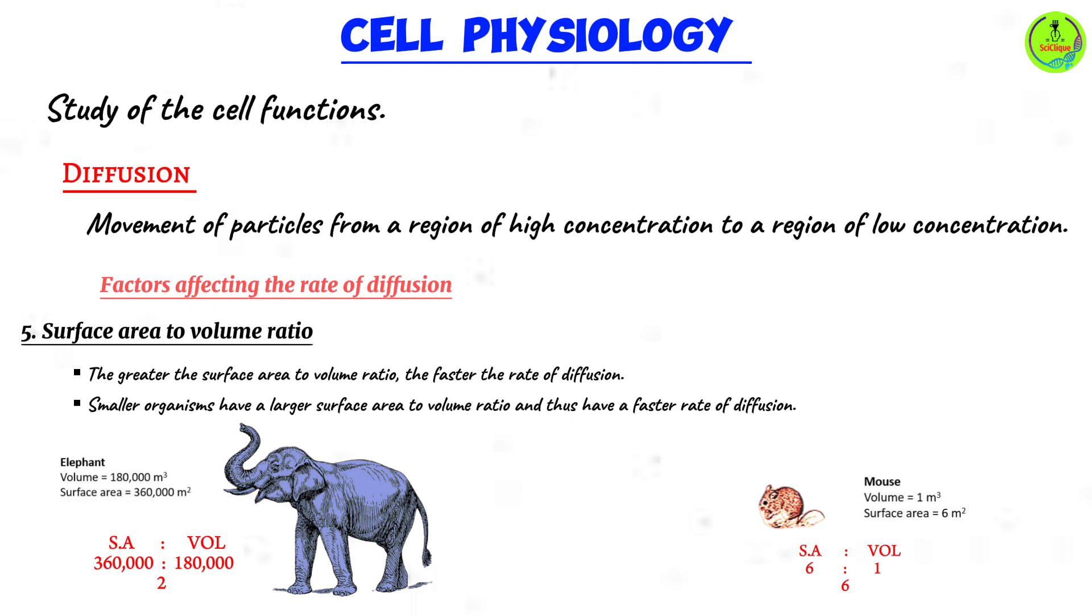On that point, I'm going to leave you with a question. Give me an example of an organ that is present in plants that has a large surface area to volume ratio and tell me the reason why.